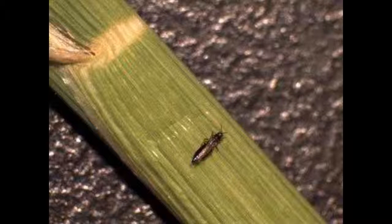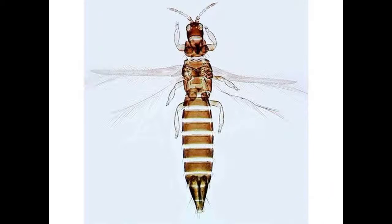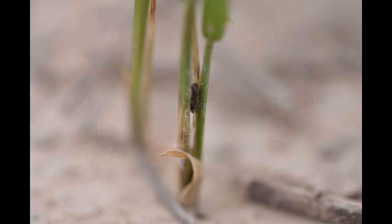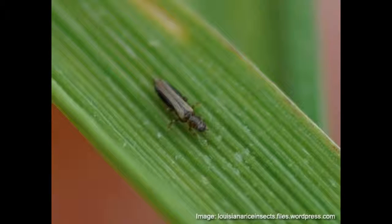Thrips are pests of rice found in most rice-growing countries of the world in all rice environments. The two most common species associated with rice are Stenchaetothrips (equals Baliothrips, equals Thrips) biformis Bagnall, and Haplothrips aculeatus Fabricius (Phlaeothripidae).